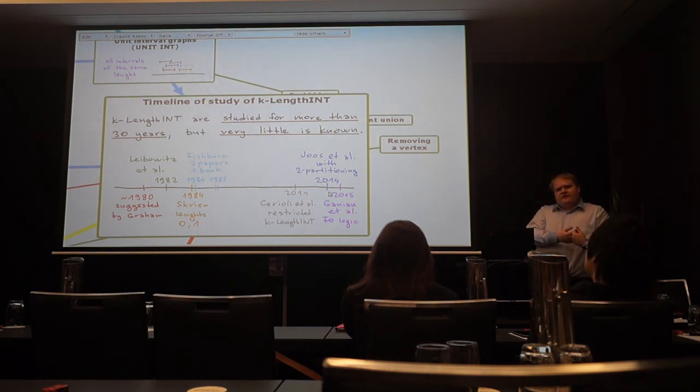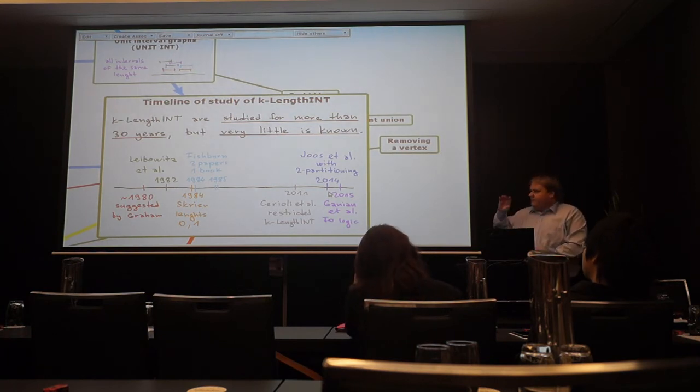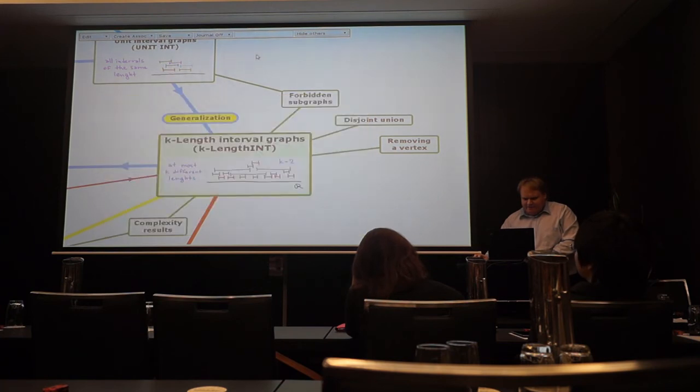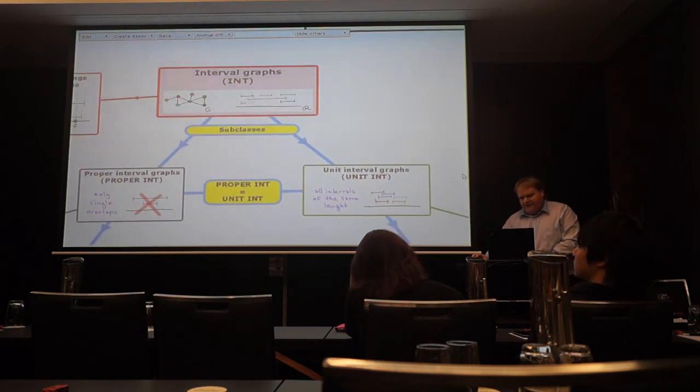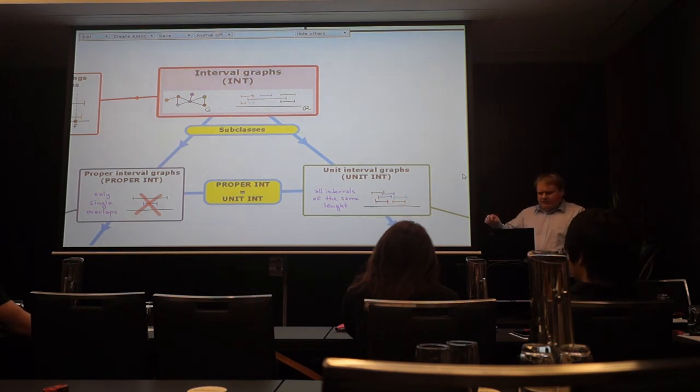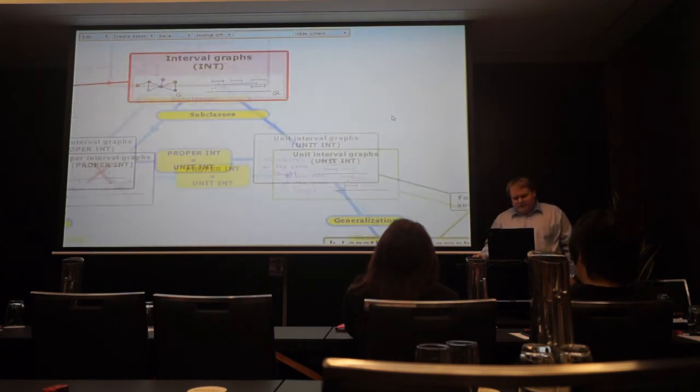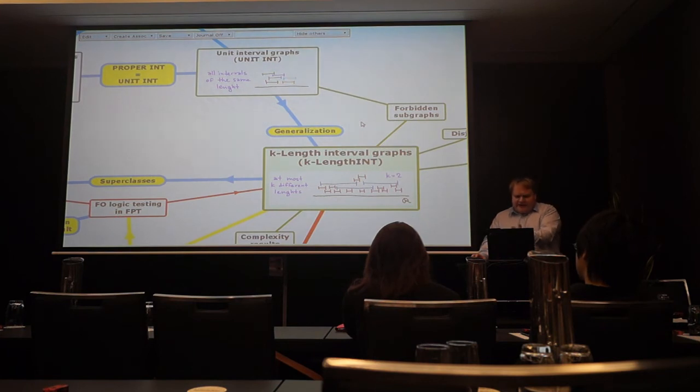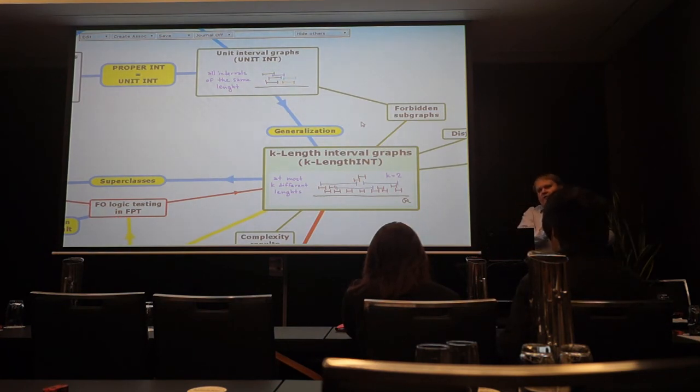And the problem here is that these classes are completely wild. The idea would be that okay I have this general class and this restricted class. And this restricted class has many nice properties which the general class doesn't have. For instance recognition for proper and unit interval graphs is incredibly simple. For interval graphs linear time algorithm took many years. And it's not so easy that I could explain to you in full details. So it was the idea that okay we will make this hierarchy of k-length interval graphs. And hopefully they will be close to unit interval graphs. And some of these properties will be shared. And we will be very happy. We can run some parameterized algorithm.